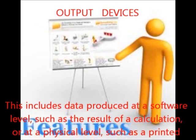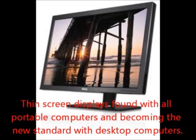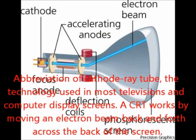Next is output features. This includes data produced at a software level, such as the result of a calculation, or at a physical level such as a printed document. Next is flat panel monitors — thin screen displays found with all portable computers and becoming the new standard with desktop computers. Next is cathode ray tubes, abbreviated CRT — the technology used in most television and computer display screens.